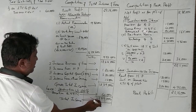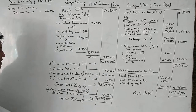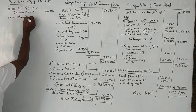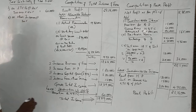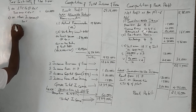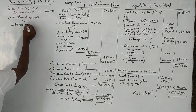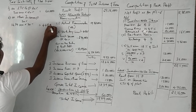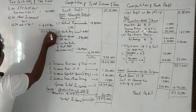Deducting ₹3,00,000 LTCG from total income of ₹17,79,000 leaves ₹14,79,000 as other income. Tax on ₹14,79,000 at 30% = ₹4,43,700. Total tax before cess: ₹60,000 + ₹4,43,700 = ₹5,03,700.